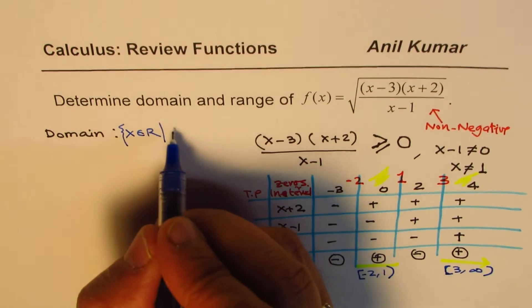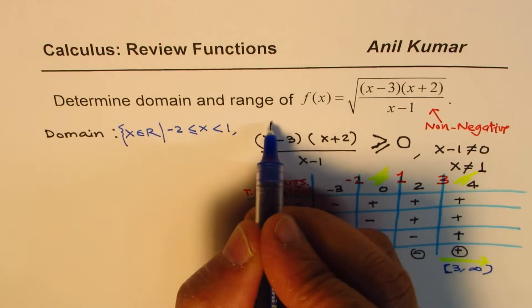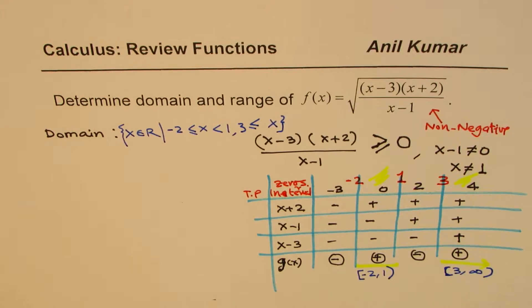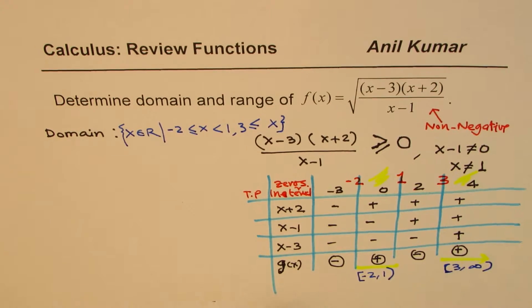So, the domain is x belongs to real numbers, where x is from minus 2 is included and 1 is not included. And it is when x is greater than or equal to 3. So, that becomes the domain of this particular function. So, we have found the domain. And that is the strategy which you can use to find domain.